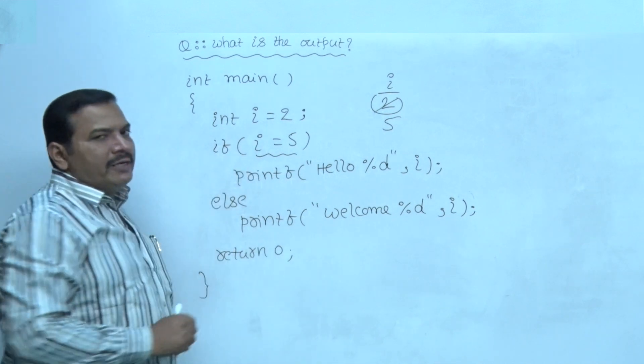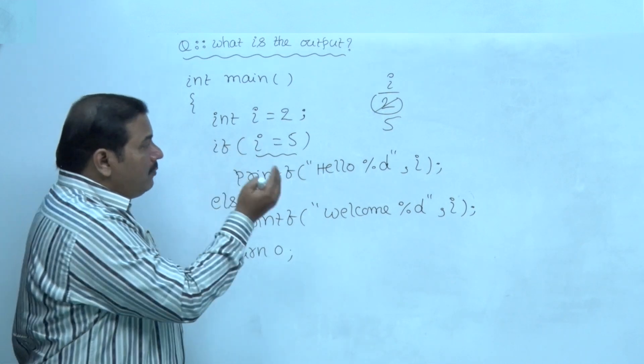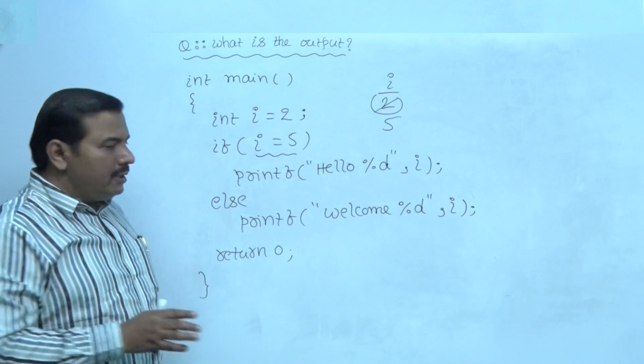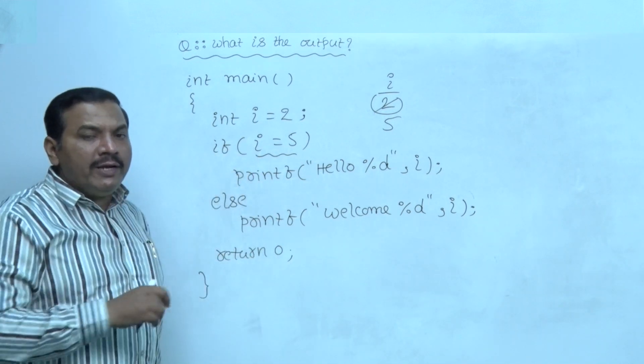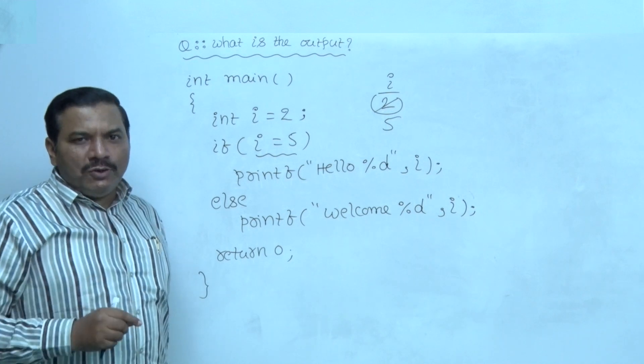Here equality is not testing. The value 5 is assigned to i. Now the value of left side operand i is 5. So, 5 is a non-zero value.